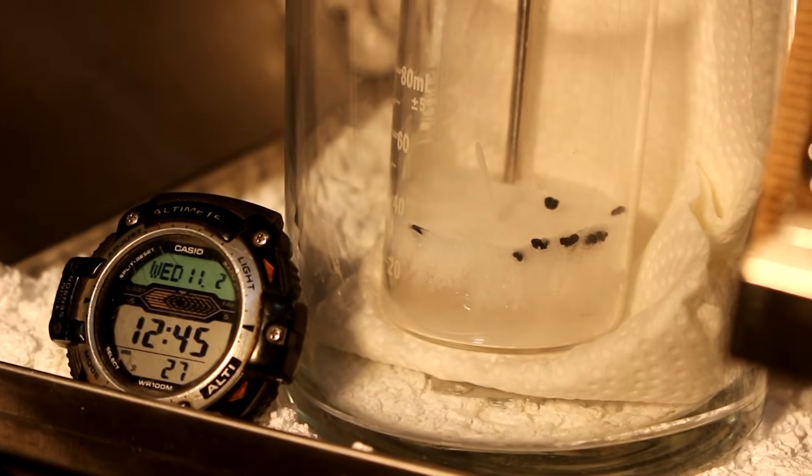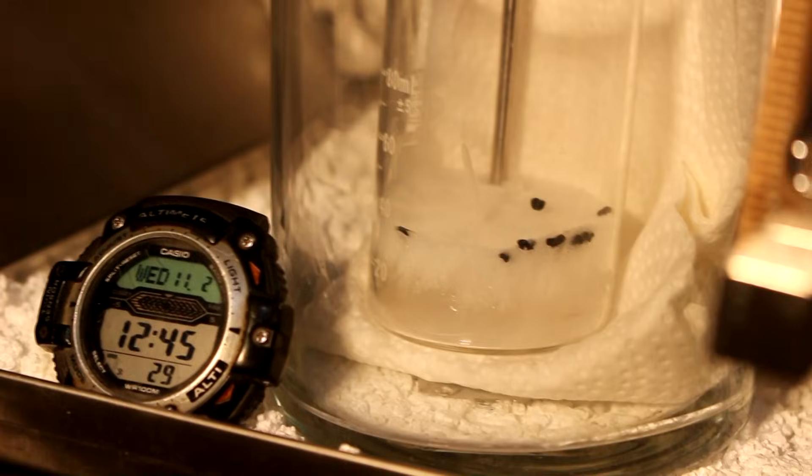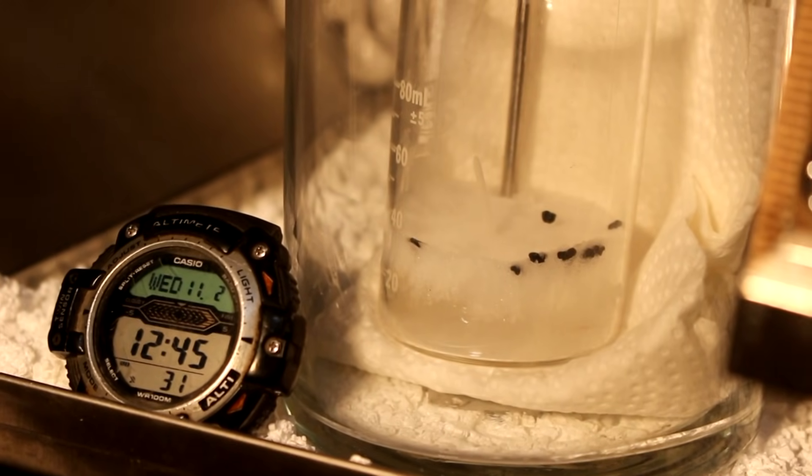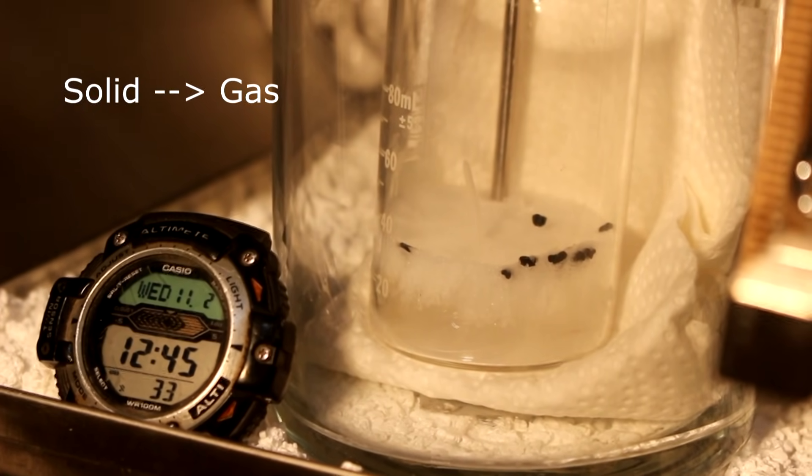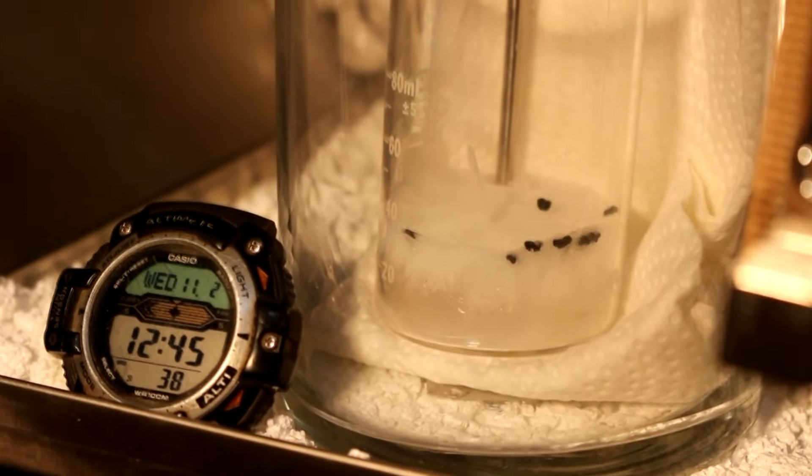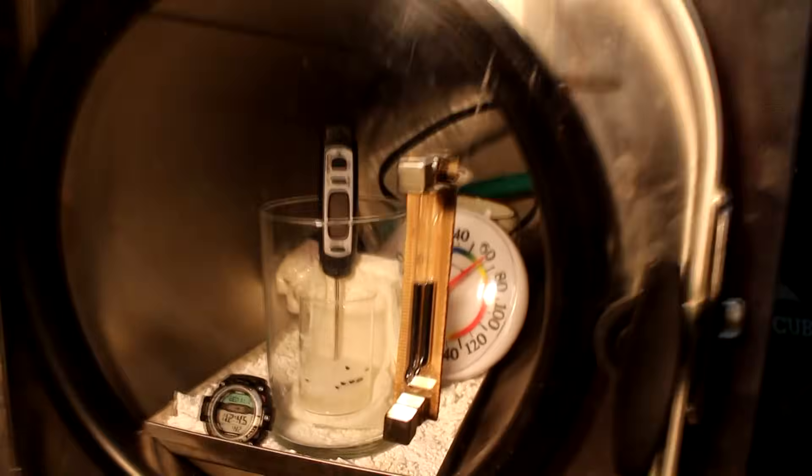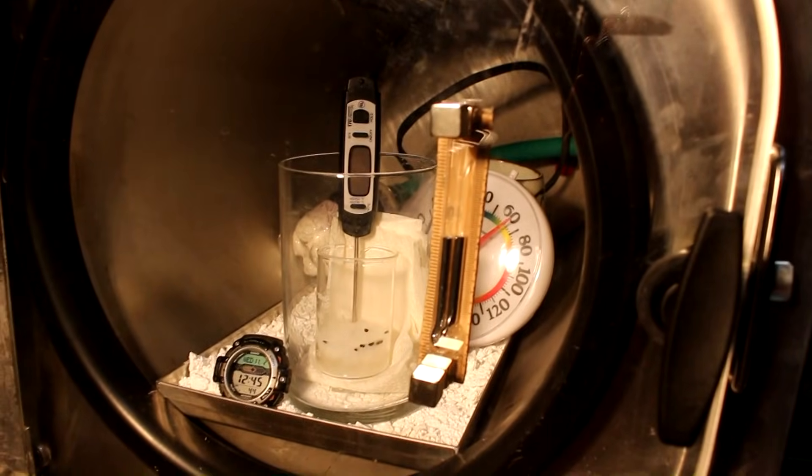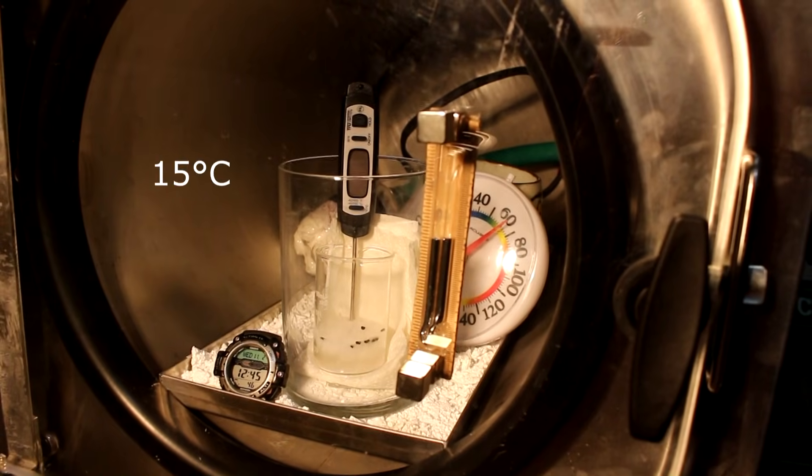You see, once the water freezes, the vapor pressure doesn't just go to zero. It still has some vapor pressure and it will actually continue to sublimate until it reaches about negative 50 degrees. That is assuming that the vacuum is perfect. That's how this freeze dryer actually works. You see the internal temperature of the chamber is holding at about 60.